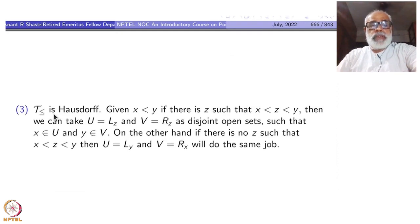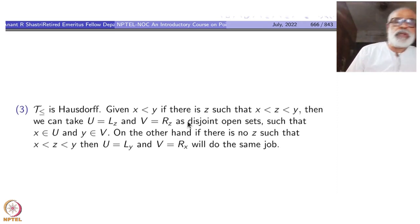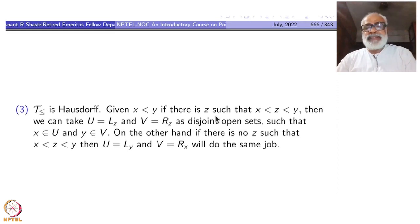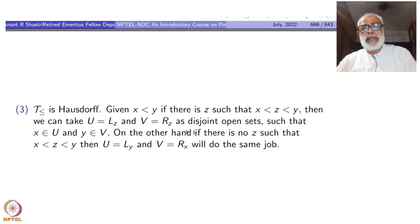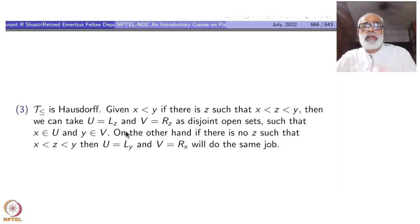First, we observe that this topology is Hausdorff. Given x not equal to y, we can assume x < y. If there is a z such that x < z < y, then we can take U = Lz and V = Rz as disjoint open subsets. Then x will be inside U and y will be inside V. So we are done — this is an argument to show the topology is Hausdorff.